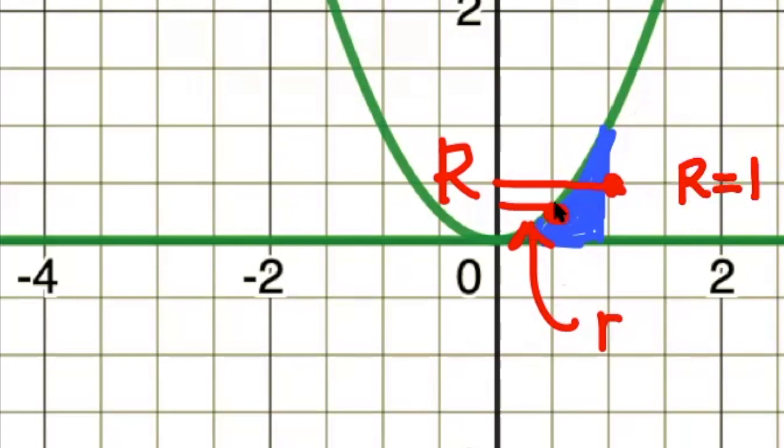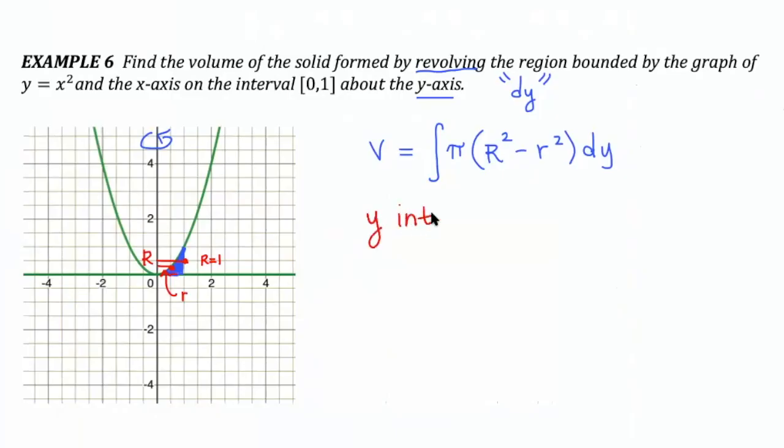Little r, however, the distance from the axis of revolution to the closest boundary of the region, that does change length. It's shorter down here at the bottom, and it's a bit longer here at the top. Little r is changing its length, which means we need to write it in terms of the variable y. If we have a y integral, we have to make sure our equations are solved for x.